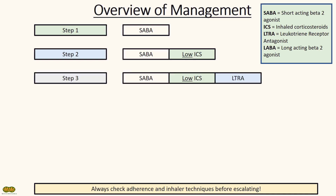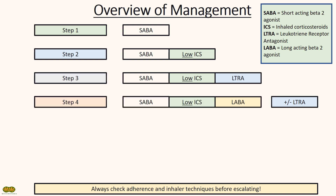Step 3 involves adding a leukotriene receptor antagonist such as montelukast. If the patient's asthma symptoms are still not well controlled, the next step would be adding a long-acting beta-2 agonist such as salmeterol. You can continue or discontinue LTRAs depending on their effectiveness.